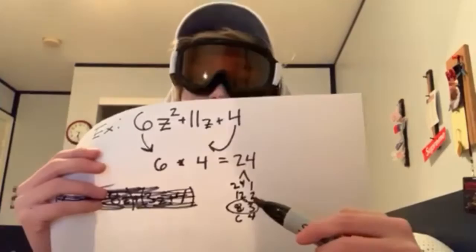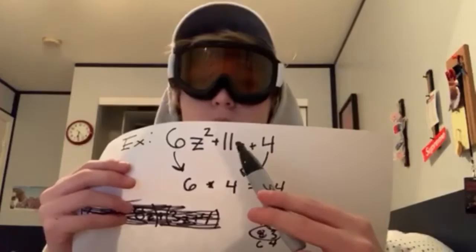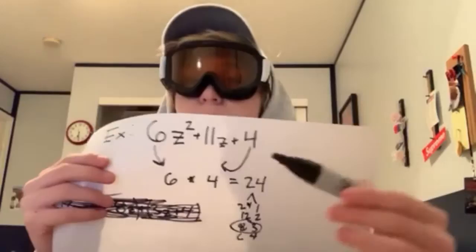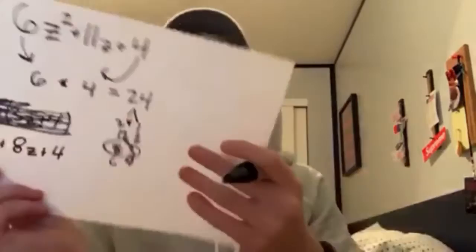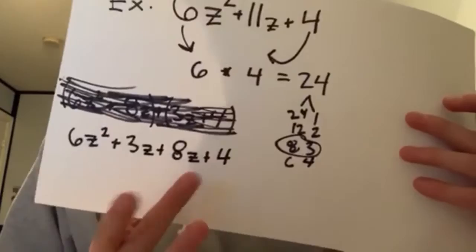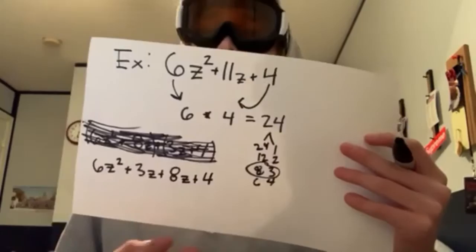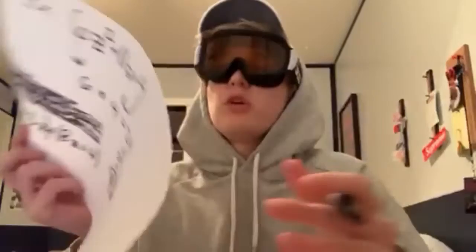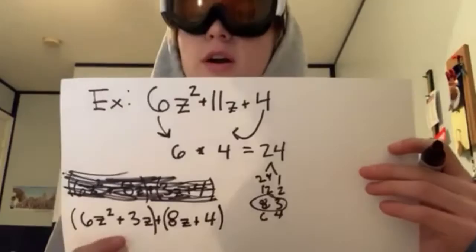You then find which pair of factors adds up to be the b value in the original equation. In this case, 8 and 3 add up to be 11. From there, you spread out the b value from the original equation. So you write 6z squared plus 3z plus 8z plus 4 — you've broken up that 11z into its two factors. Then you group the two sections together by placing parentheses around them, and the next step is finding the greatest common factor out of both groups.